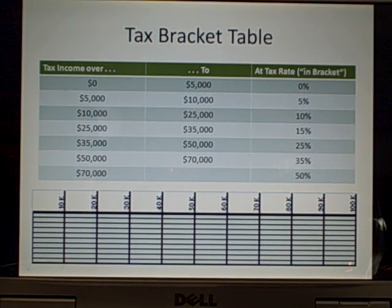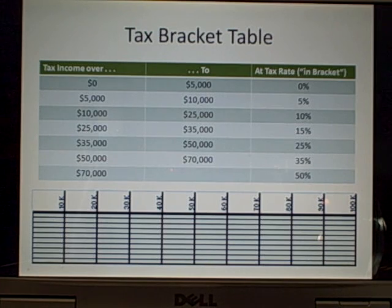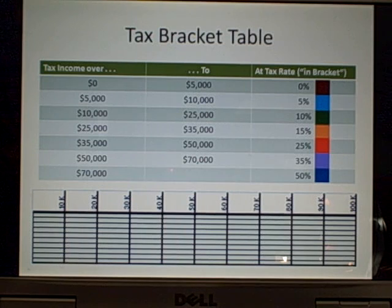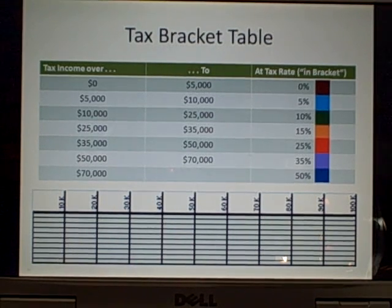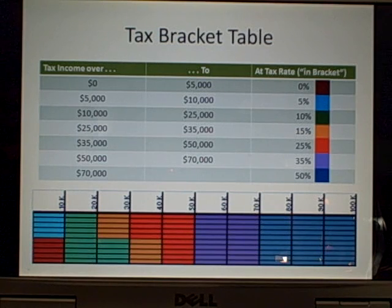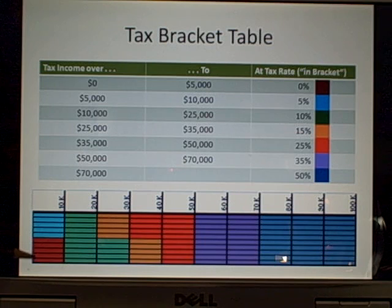Ten stacks, each ten thousand dollars high, for a total of a hundred thousand dollars — that'll take us through all the brackets. In order to visualize the brackets better, we're going to use colors to show the different brackets and color our stacks of money to match. The first five thousand dollars you earn is down here — that's your first five stacks — and that's taxed at zero.